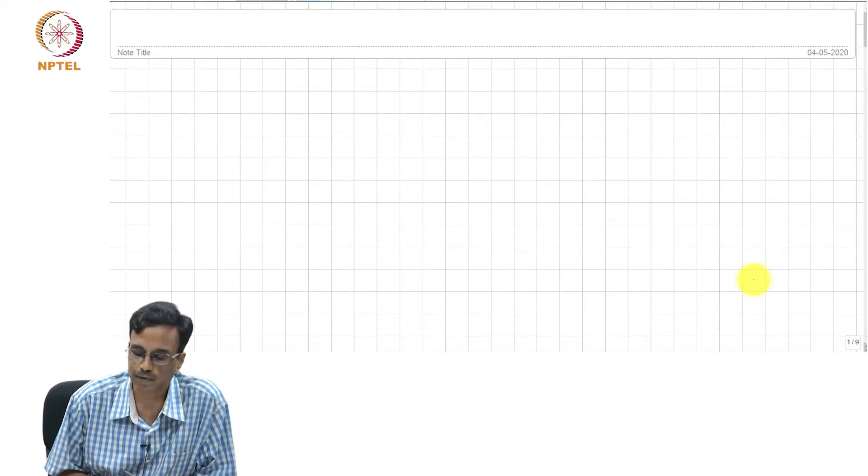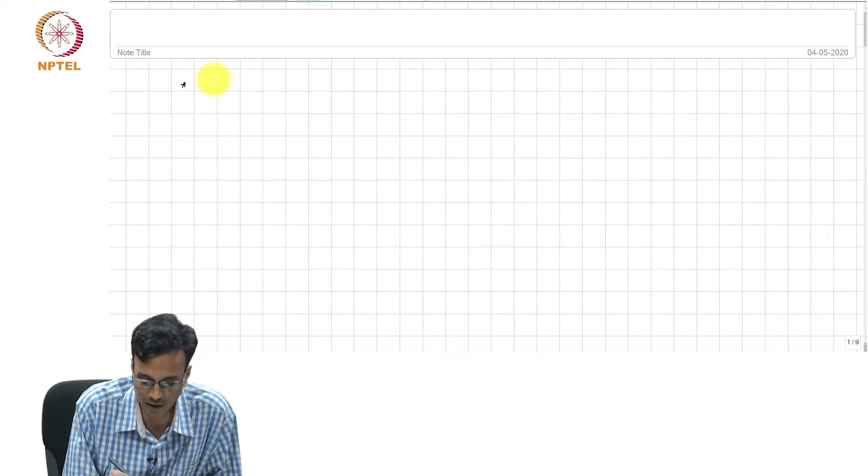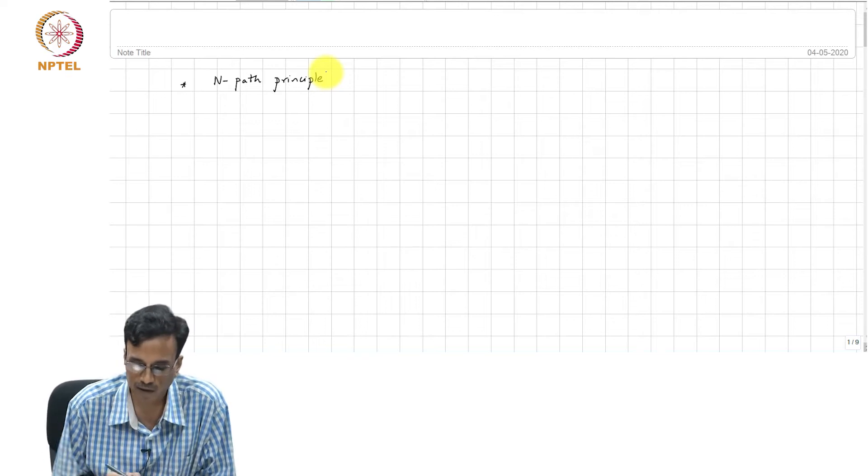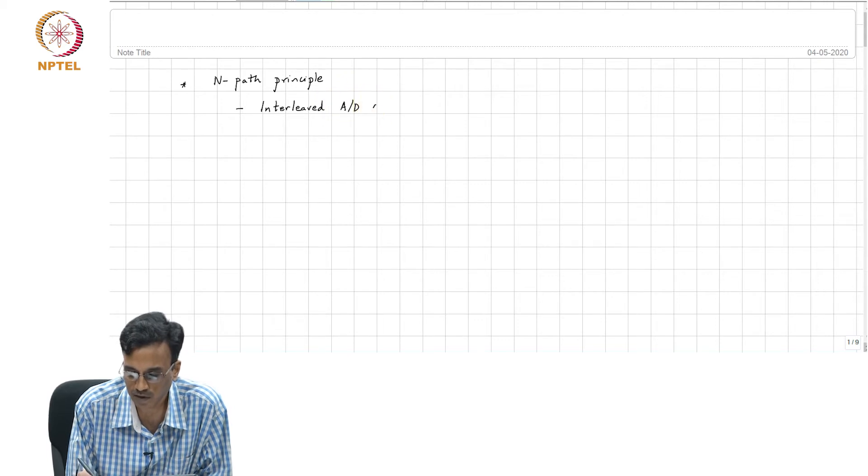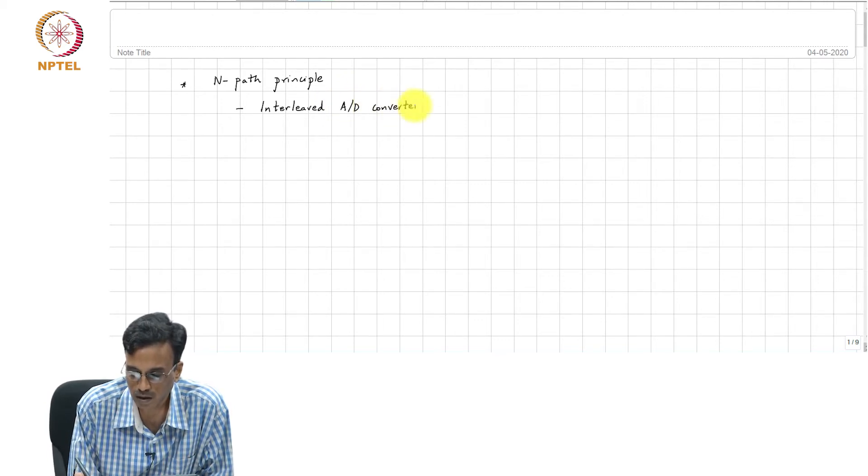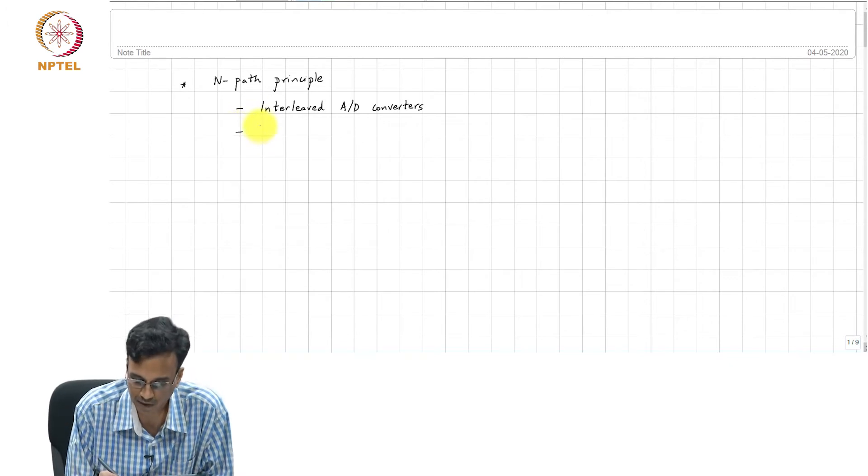So, let us continue where we left off yesterday. We were discussing the N-path principle and we saw one practical case system which uses this N-path principle, which is the area of time-interleaved analog to digital converters. Another area which also uses this is multiphase DC-DC conversion, and the basic principle behind that is what I am going to explain today.